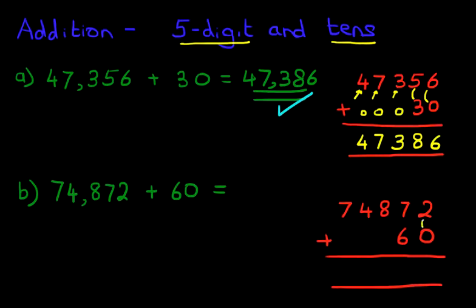As always, we start on the right-hand side. 2 plus 0 is 2. Next, we've got 7 plus 6. 7 plus 6 is 13. Put 1 here and 3 here. The 1 has become part of the hundreds column.